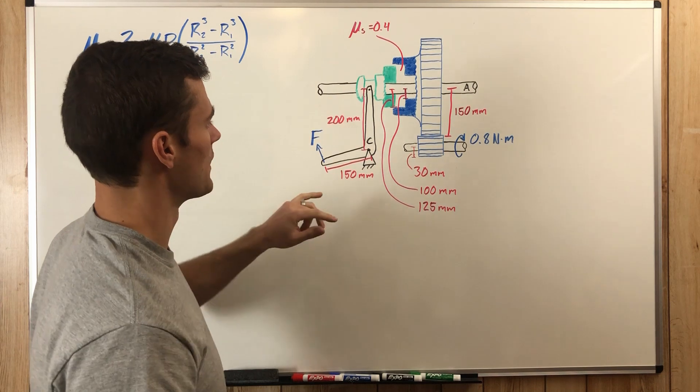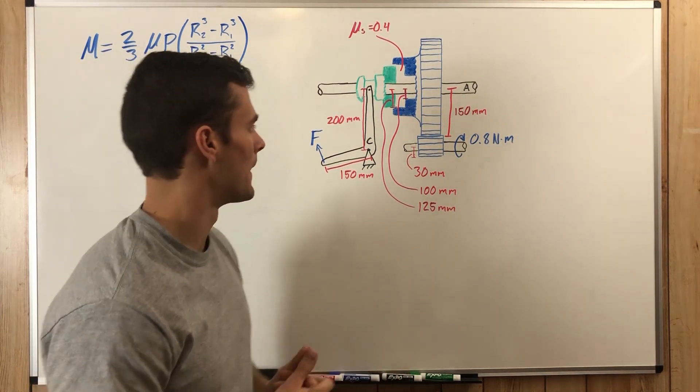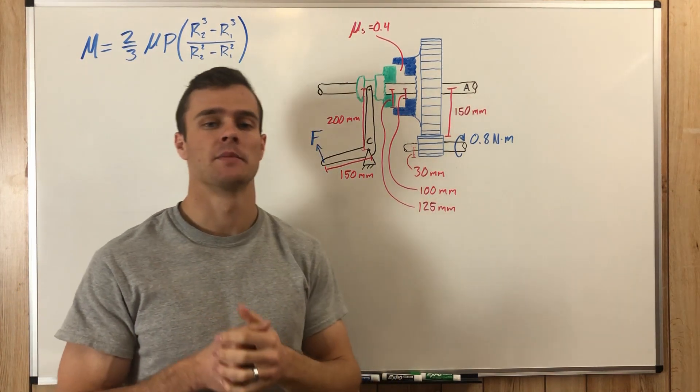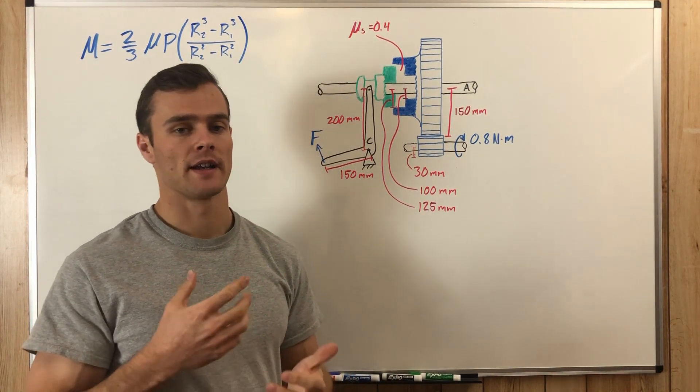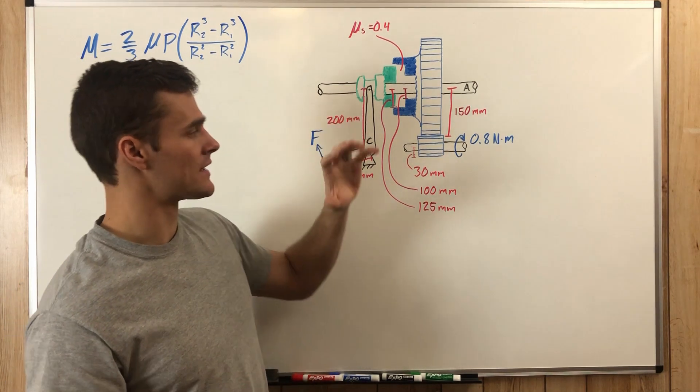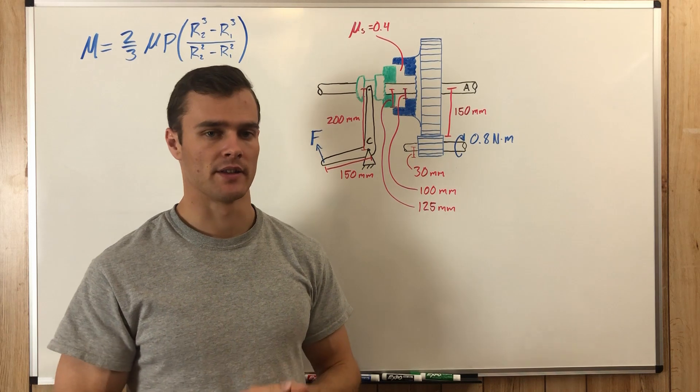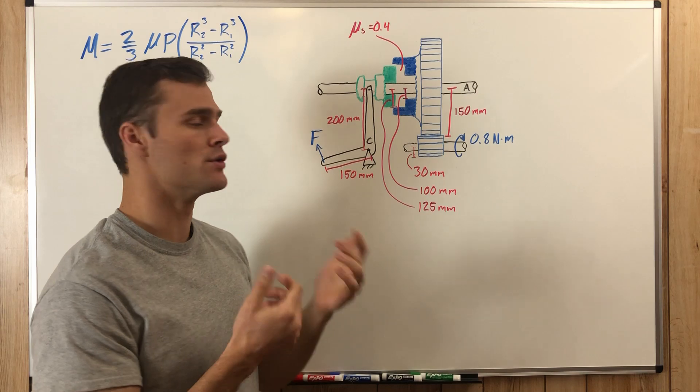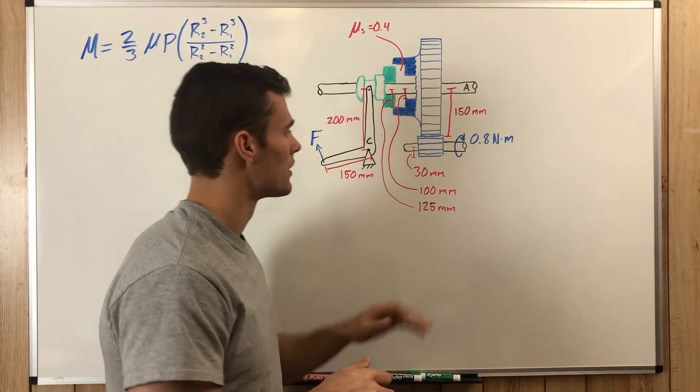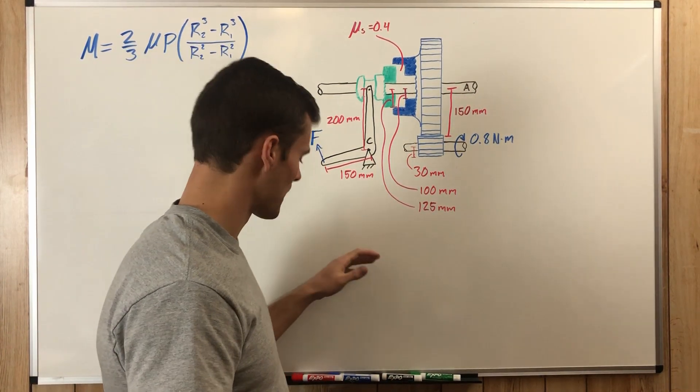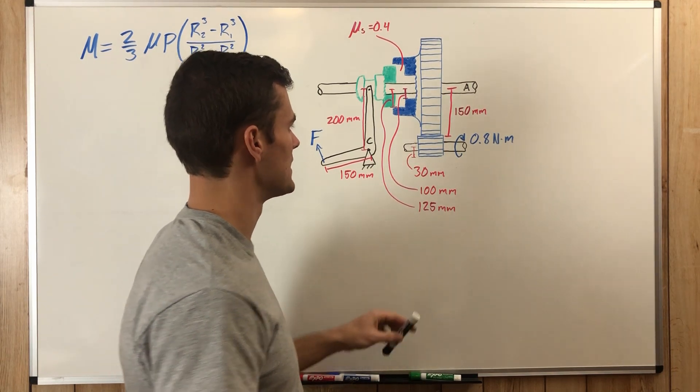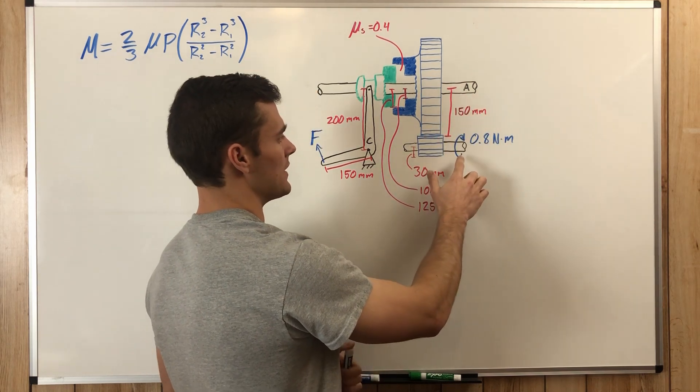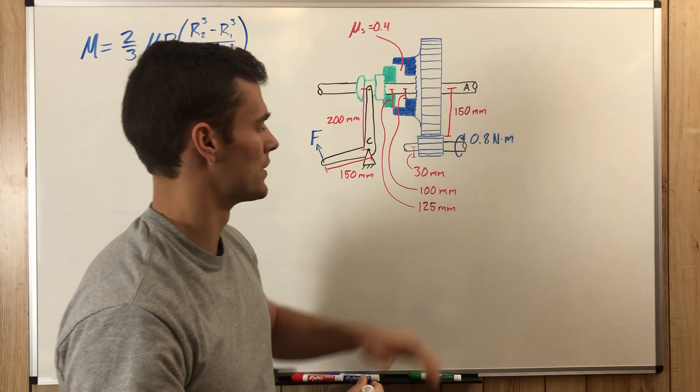Then we have our coefficient of static friction. The reason why that is static is because we need to find out how much force is needed to stop the whole mechanism, which means we need to use the coefficient of static friction. Looking at this, to find out what the moment is on this shaft A given that this torque of 0.8 newton meters is applied to this gear.